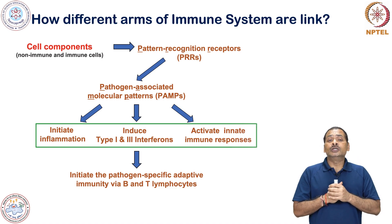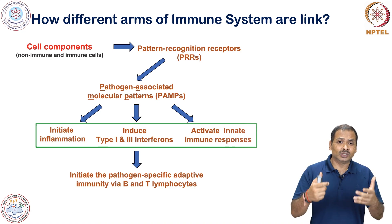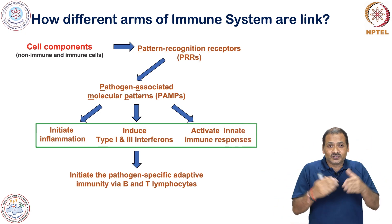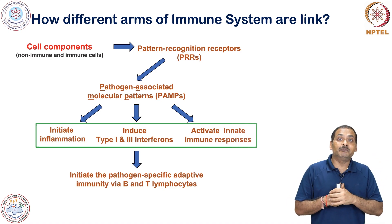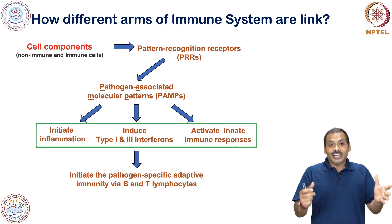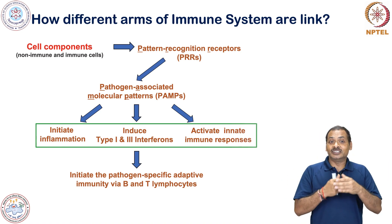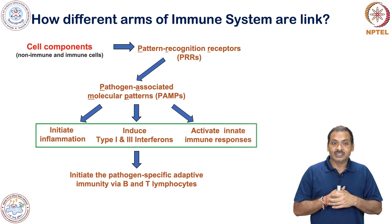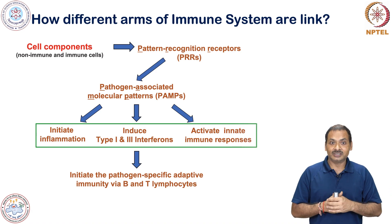However, if the pathogen is not eliminated, then all these responses basically prepare the ground for activation of the adaptive immune response, which is mediated by B cells and T cells. In that way, you can see how beautifully innate and adaptive immunity integrate and defend the host against various kinds of microbial infection. With this I will stop here, and in the next lecture I will discuss about the various immune organs. Thank you.